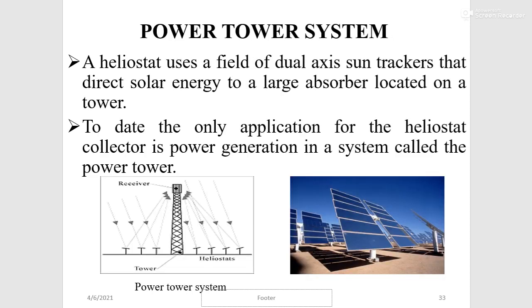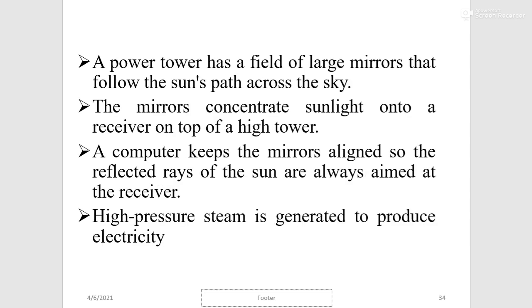A power tower system uses a heliostat field of dual-axis sun trackers that direct solar energy into a large absorber located on a tower. A power tower has a field of large mirrors that follow the sun's path across the sky, concentrating sunlight into a receiver on top of a high tower. A computer keeps the mirrors aligned so that the reflected rays of the sun are always aimed at the receiver, and high-pressure steam is generated to produce electricity.